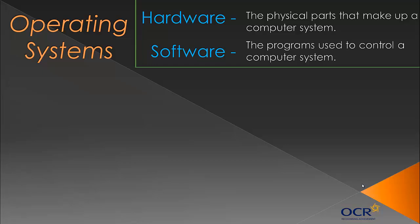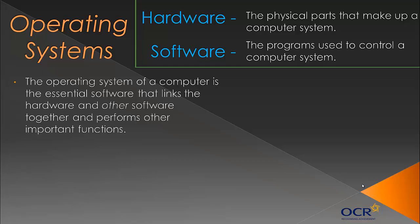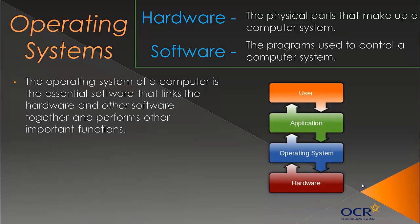First of all, we've got to look at what is known as an operating system. It's the essential software — your computer needs an operating system for human interaction to take place. It links the hardware and other software, so other applications and programs together. Looking at a diagram, the user interacts with the applications, those applications interact with the operating system, and through it they allow access to the hardware. It bridges the gap between the applications and the hardware.